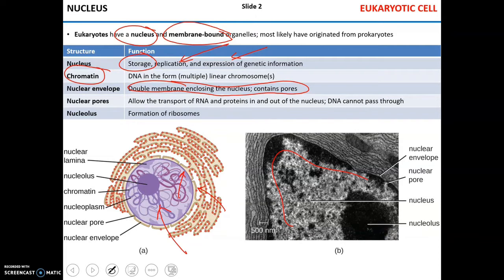Deep in the nucleus you can find a separate structure that is not membrane-bound called the nucleolus, or the small nucleus. The function of the nucleolus is the formation of ribosomes.